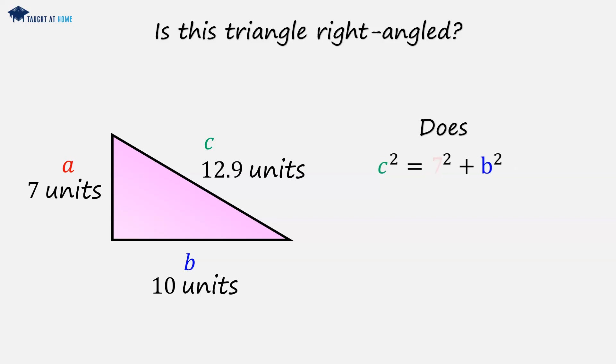Substituting in, a is 7 and b is 10. 7 squared is 49 and 10 squared is 100. 49 plus 100 is 149.